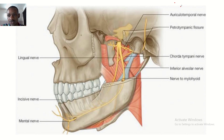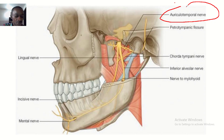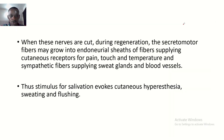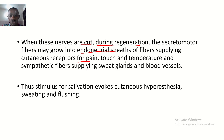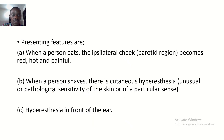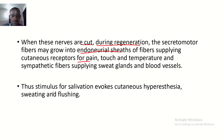The auriculotemporal nerve contains parasympathetic (secretomotor), sensory, and sympathetic fibers. When these nerves are cut, during regeneration the secretomotor fibers may grow into the endoneural sheets of fibers supplying the cutaneous receptors for pain, touch, and temperature, and sympathetic fibers supplying sweat glands and blood vessels. Thus, stimulation for salivation evokes cutaneous hyperesthesia, sweating, and flushing.